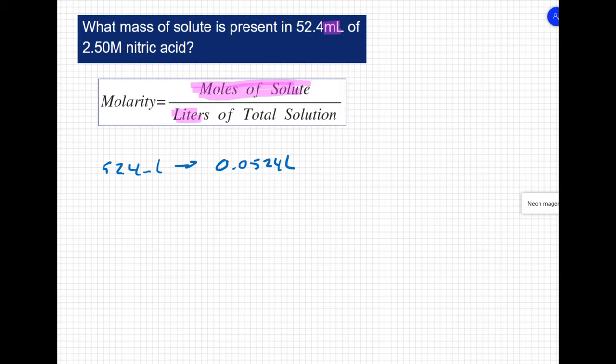The molarity equation is telling us that 2.50 molar is going to equal the moles of solute, that's what we're looking for, over the liters of solution, over 0.0524 liters. So my moles are going to equal 2.50 molar times 0.0524 liters, which equals 0.131 moles of my solute.